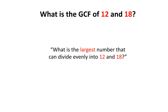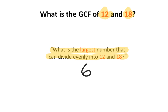I now want to know: what is the GCF of 12 and 18? In other words, what is the largest number that can divide evenly into 12 and 18? Using mental math and your times tables, some of you may have come up with the number 6, since it is the largest number that can divide evenly into 12 and 18. However, if you're not good with your times tables, you're going to have to use prime factorization.